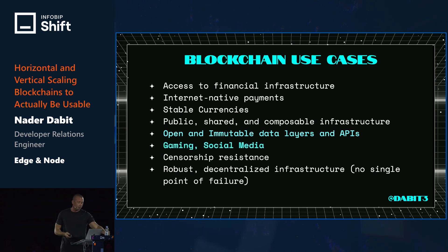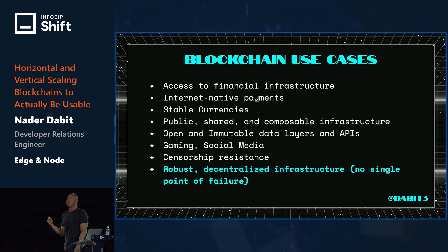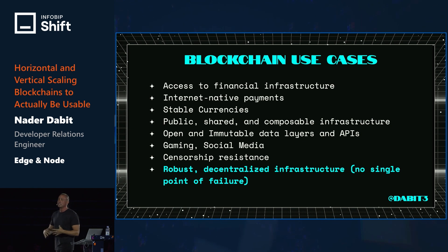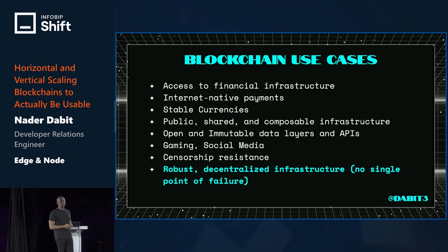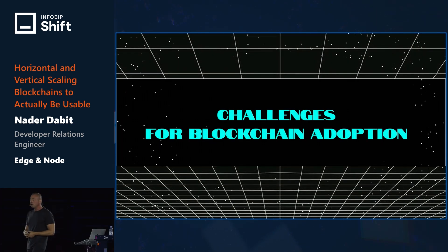Other use cases coming into play are gaming and social media. Censorship resistance and robust decentralized infrastructure — no single point of failure. We're so used to brittle databases where if something goes wrong your application goes down. With most decentralized networks, you have the same application running across an entire network of nodes, so even if 95% of the network goes down, your application should still be running.